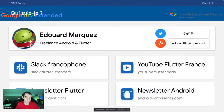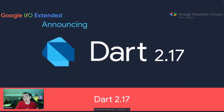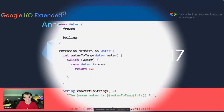Je vais commencer par vous parler des nouveautés autour de Dart et de Flutter à la Google I.O. Avant de s'intéresser à Flutter, on va regarder déjà le langage. Le langage, c'est Dart, et il y a eu la version 2.17 qui a été présentée.